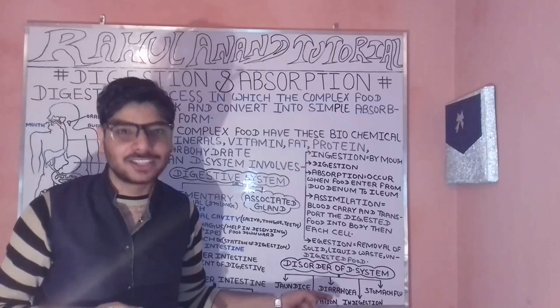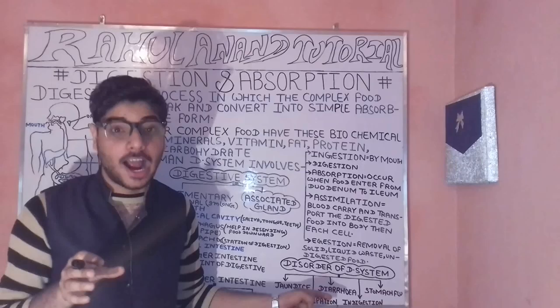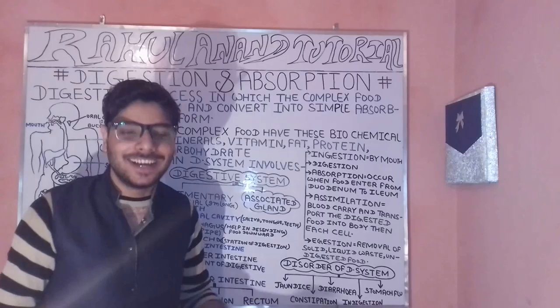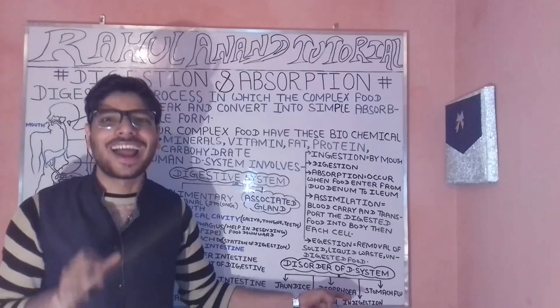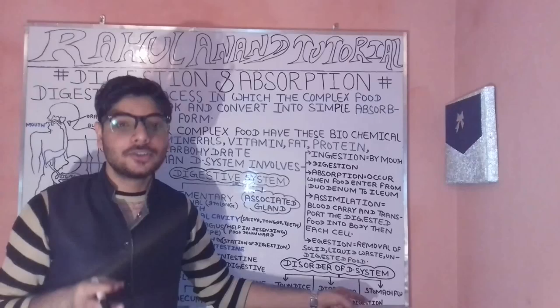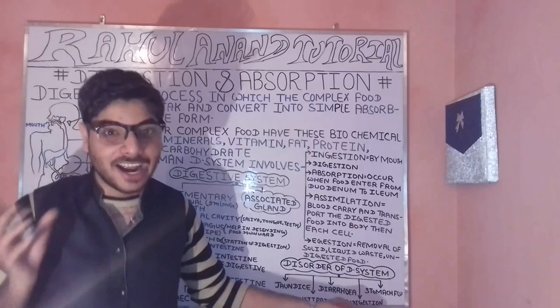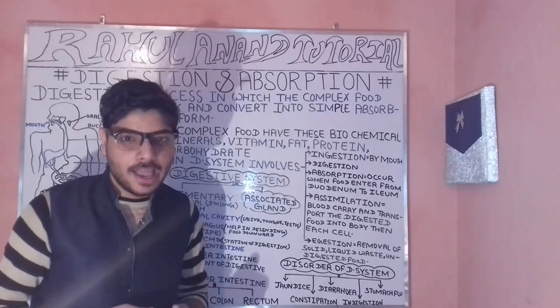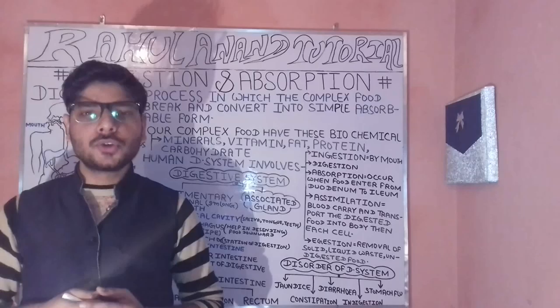Constipation and diarrhea are inversely proportional. For diarrhea, antibiotics such as azithromycin are given. Diarrhea is a disorder of the digestive system. Finally, stomach flu symptoms originate from the digestion and absorption case.